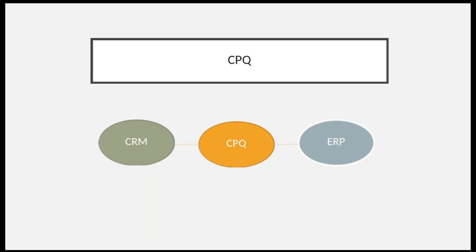SAP CPQ also prevents manual errors that would otherwise occur in a fast-paced environment. The sales team can see all relevant discounts and margins easily during the quoting process. This gives confidence that your sales representative can submit the right quotes to your customer without any human error.